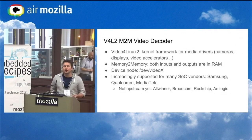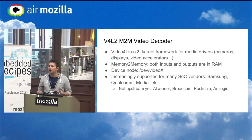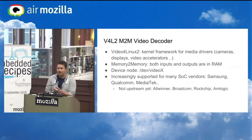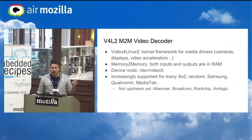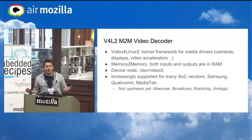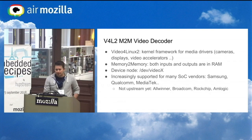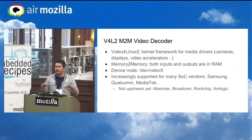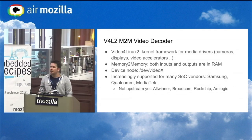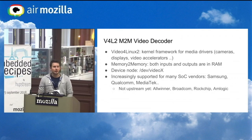Before the technical details, a little bit about V4L2 and the memory-to-memory stack. Video for Linux 2 is a kernel framework for many media drivers: camera drivers, display drivers, and video accelerators — which are hardware video decoders and encoders. Memory-to-memory simply means that both the input and the output of the driver are in RAM. The device nodes for such devices are usually /dev/video0, 1, 2, etc. Video decoding using this framework is increasingly supported for many SoCs on the market.